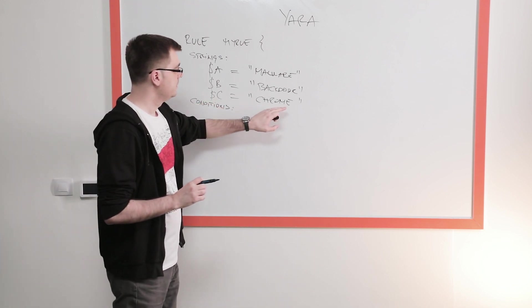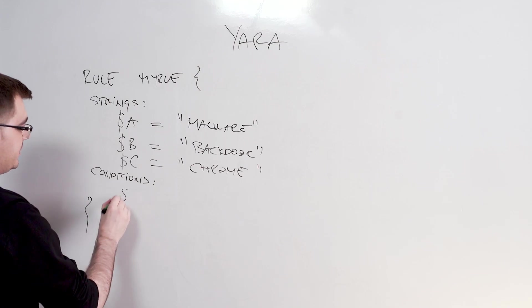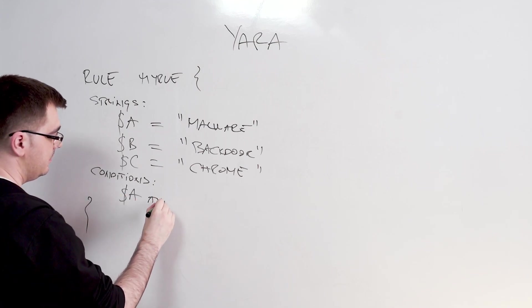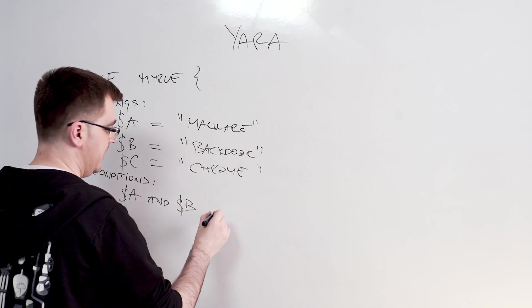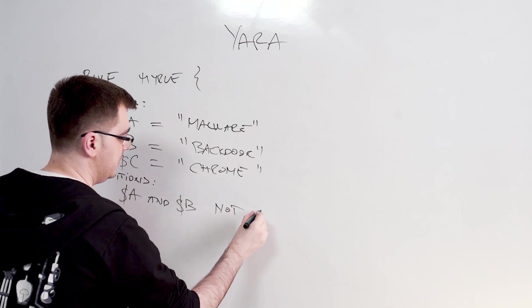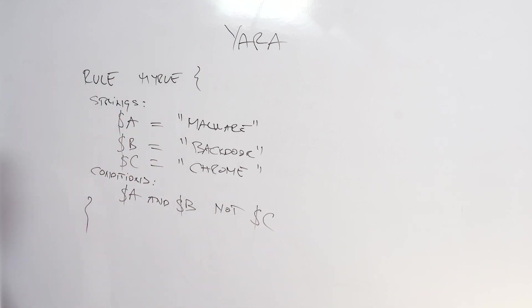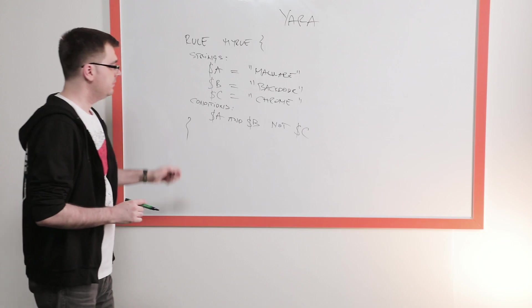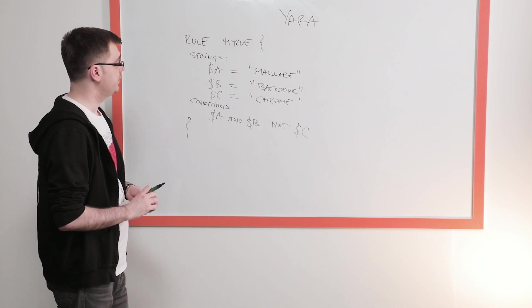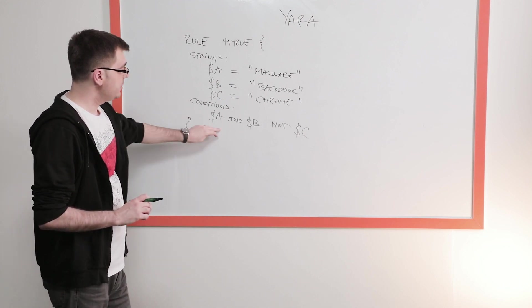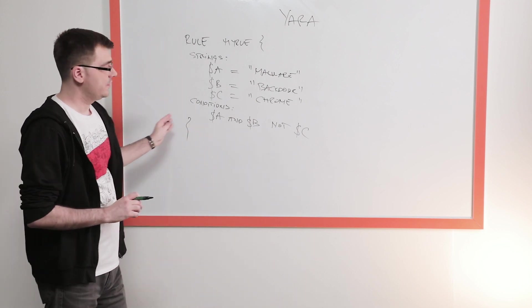But we do not want to trigger on Chrome, say A and B together but no C. So let's say not C. And that would be an example of a Yara rule which should match only in the cases when the file contains A and B but not C. And I made a mistake here and I did this intentionally just to show how easy it is to make mistakes in these kind of programming languages because logical expressions when written like this are evaluated from left to right.